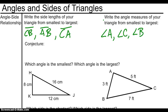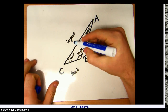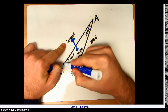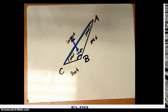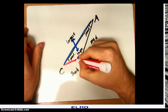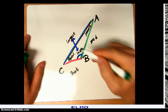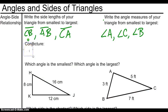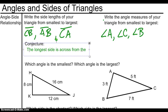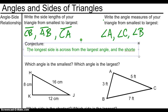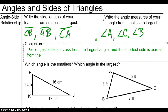I'm starting to see a pattern here. Looking at my diagram, I'm seeing that the longest side and the largest angle are directly across from each other. This is my longest side, this is my largest angle. I'm also seeing that the shortest side is across from the smallest angle, and the medium length side is across from the medium length angle.